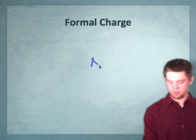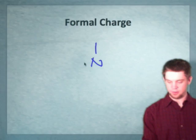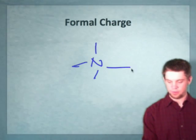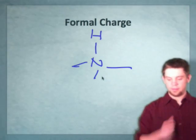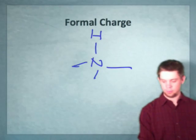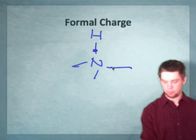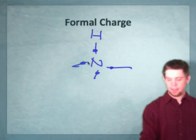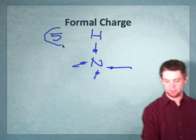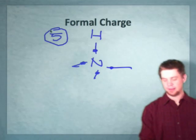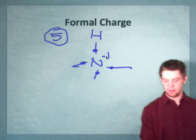So consider the nitrogen shown here, nitrogen of the trimethyl ammonium cation. This nitrogen possesses four electrons, one each from each of the sigma bonds associated with it. And as a result, because nitrogen normally prefers five, being in group 15, we would say this nitrogen has a positive charge.